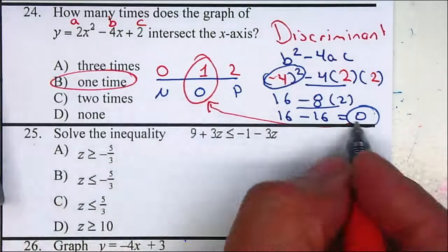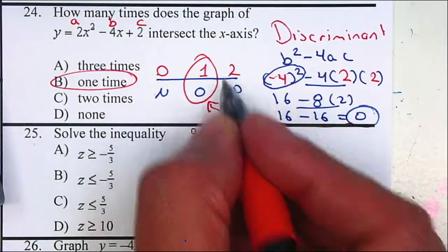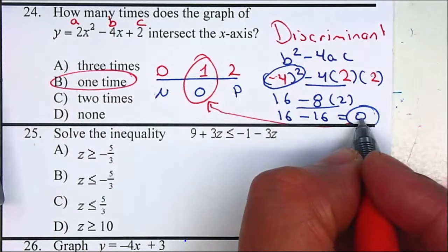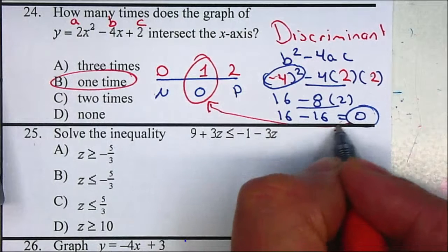If it happens to be a negative number, we have 0 solutions. And if it's positive, we have 2 solutions. Remember, this is the number that goes inside the square root. So if it's 0, we no longer have the plus or minus. It's gone with 0.